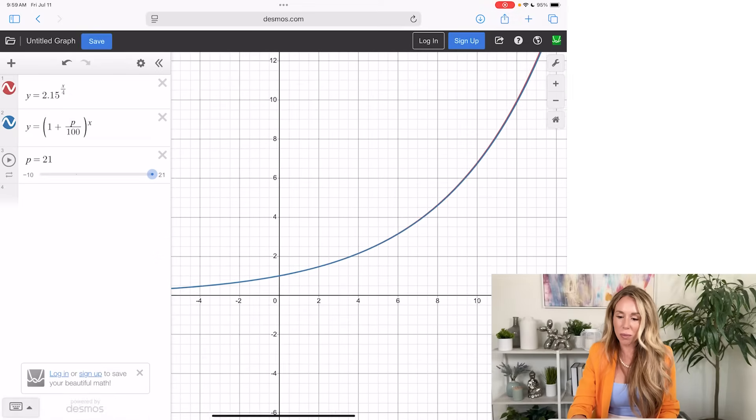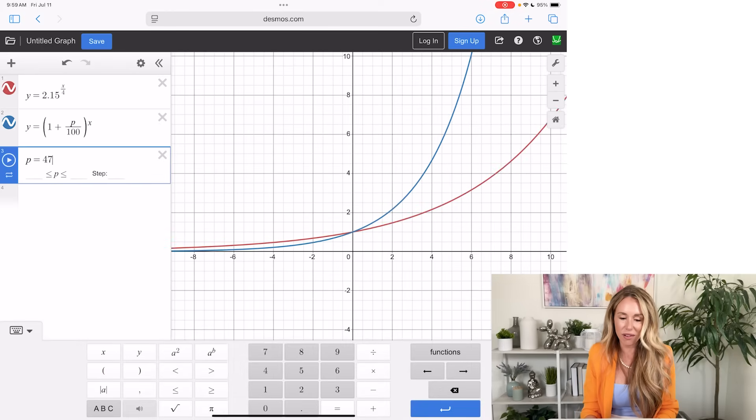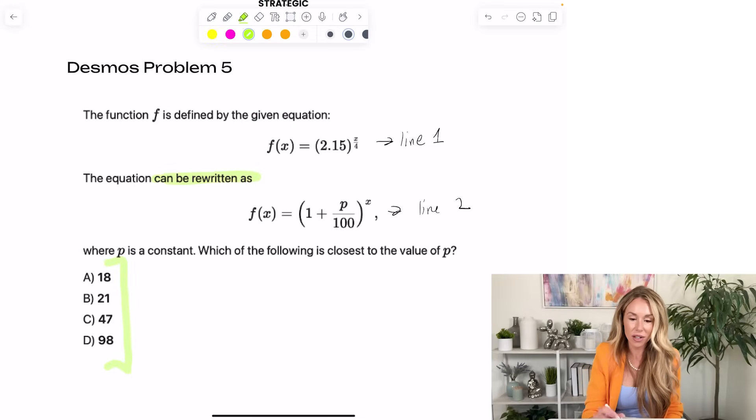So when they give you values for the constant, just type in each one and it will save you some time. So I'm going to try 18 first. Now as you can see, those graphs really are not exactly the same. Let me try 21. Wow, they're almost perfectly overlapping. If I go to the next one, 47, now they get further apart. So 21 was the closest. So because I said which of the following is closest? Look for that language. It doesn't need to be exact. It's an approximate. So our answer is going to be 21.